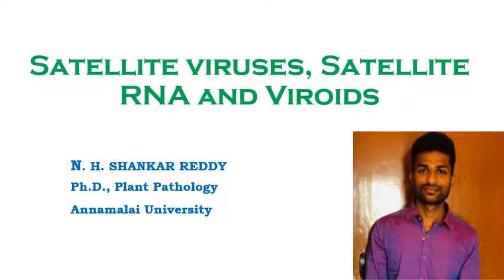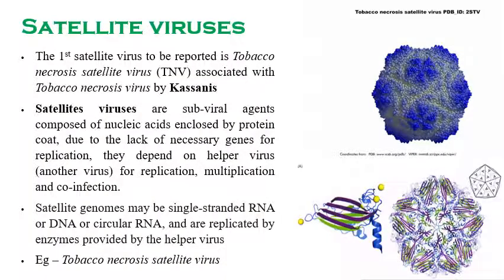The first satellite virus reported was the tobacco necrosis satellite virus, which is associated with the tobacco necrosis virus. It was discovered by Casanis. This is a very important question that may be asked in the National Eligibility Test — the satellite virus was discovered by Casanis, and the first satellite virus is the tobacco necrosis satellite virus.